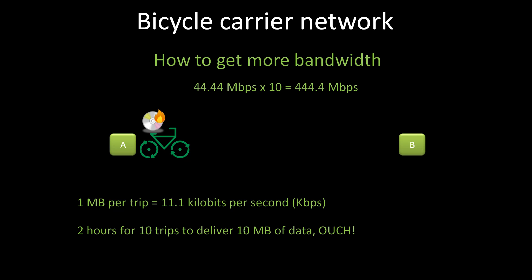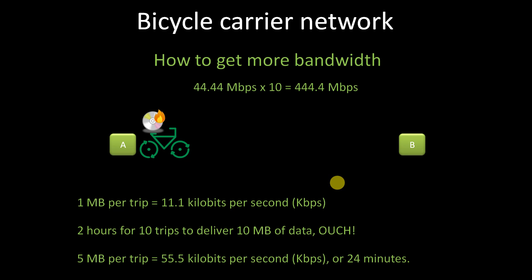In the real world, a lot of applications have this problem of requiring too many round trips. Application engineers will often tune their applications to require fewer round trips. If they can get it down to two round trips at five megabytes per trip, we can effectively boost the bandwidth to 55.5 kilobits per second, or cut our two-hour transaction down to 24 minutes.